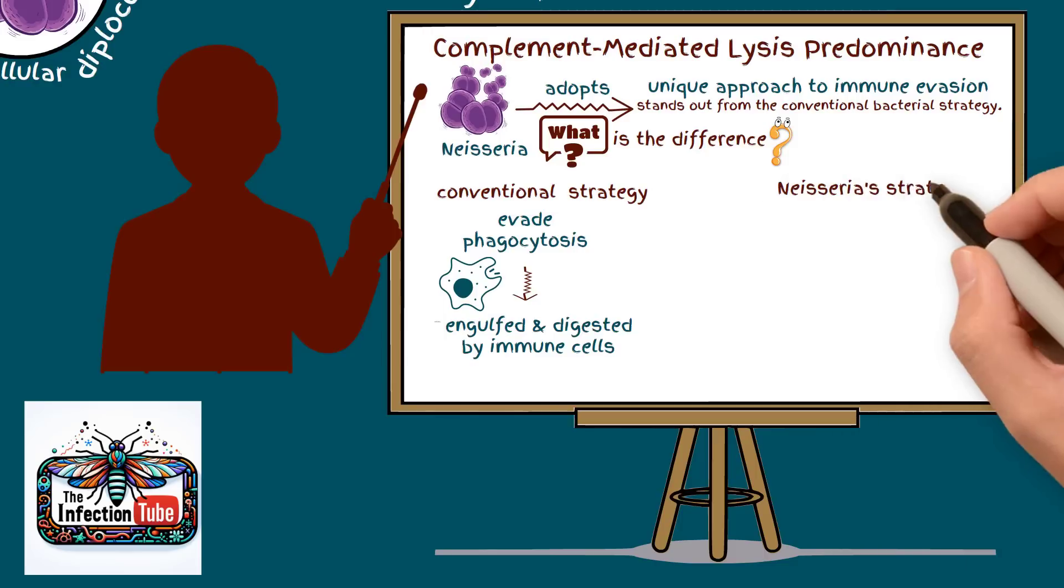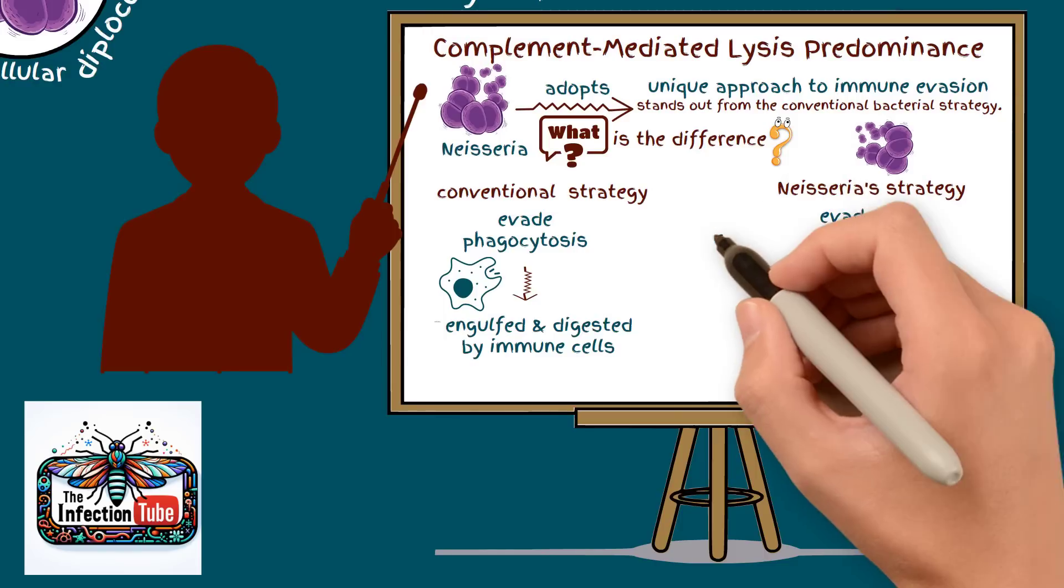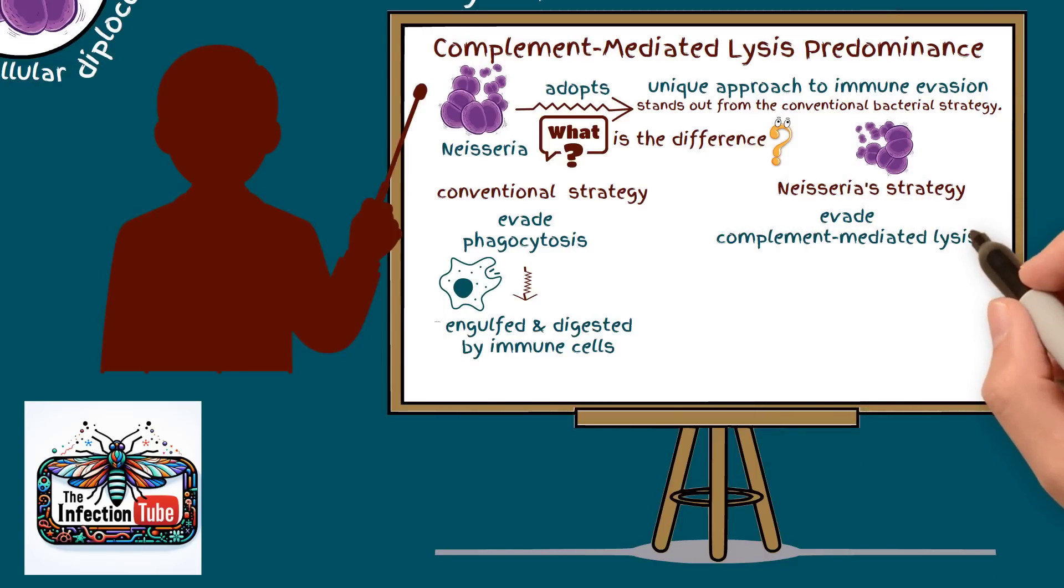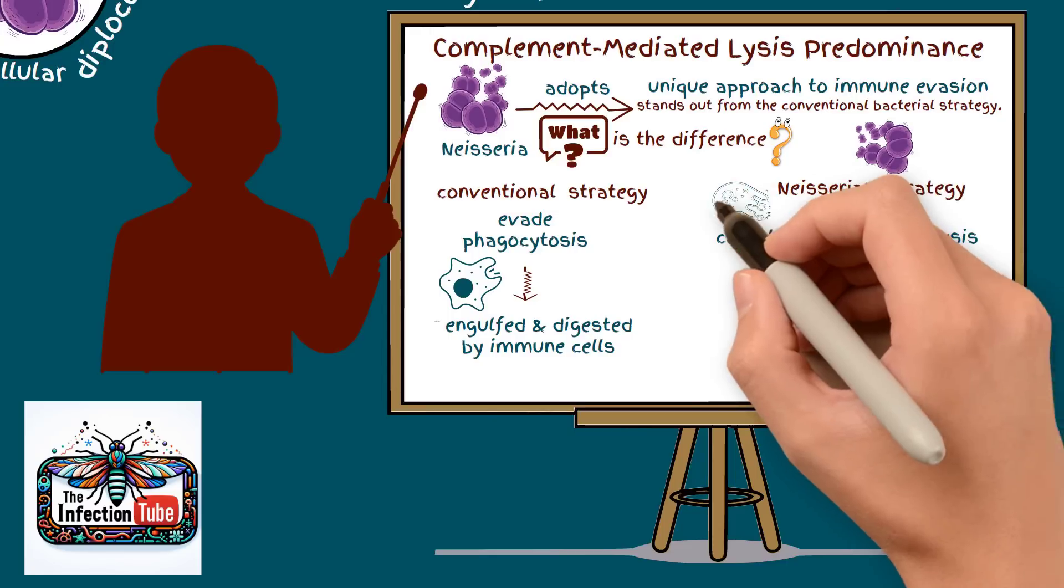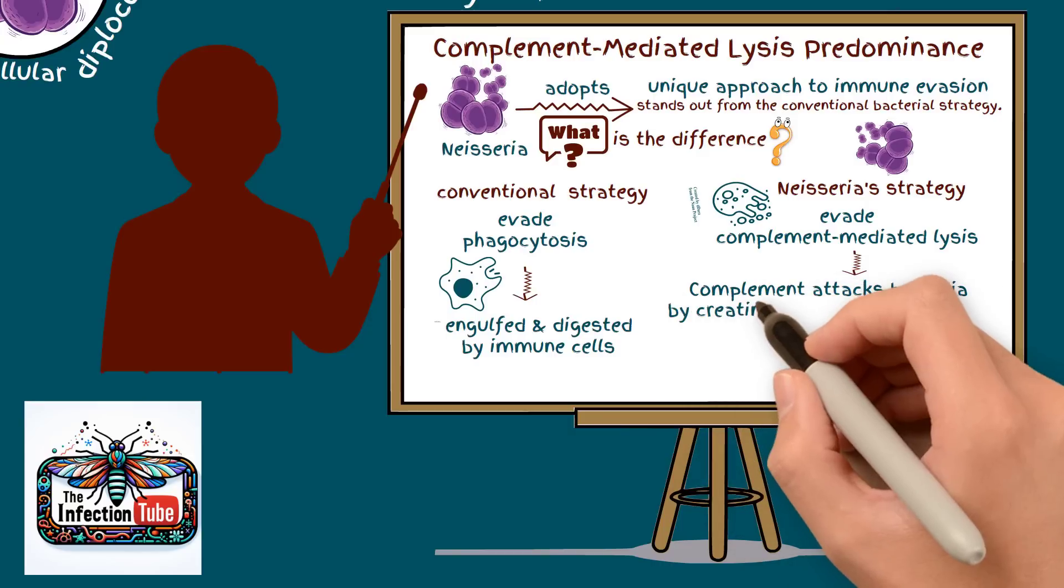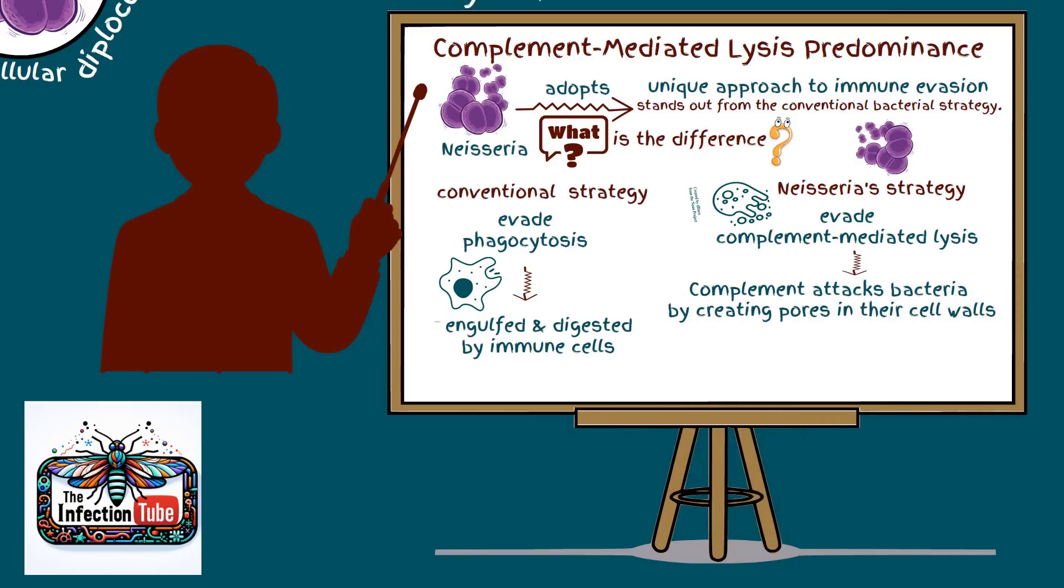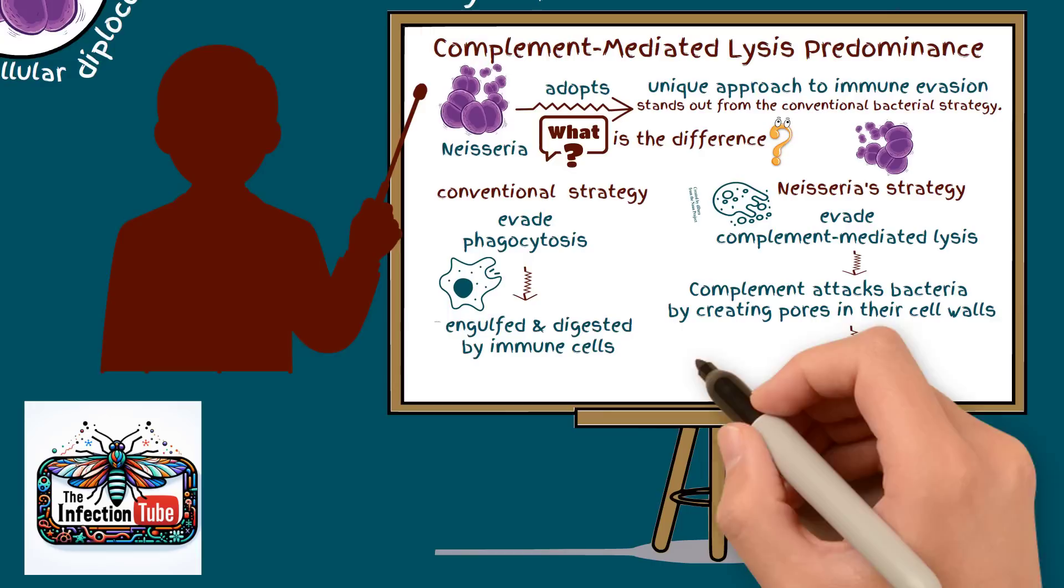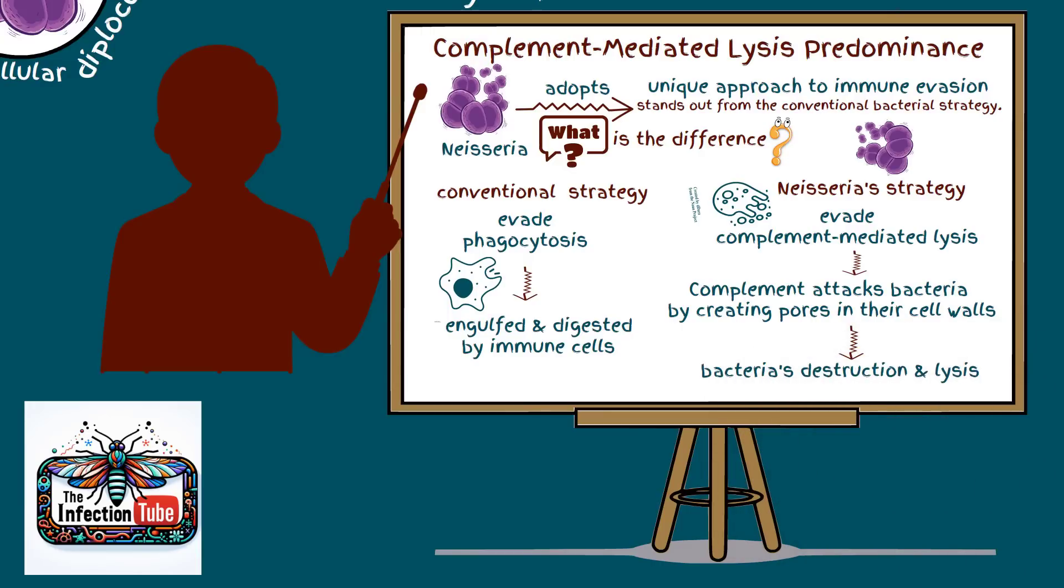However, Neisseria's strategy is to target evading complement-mediated lysis. This is a defense mechanism where the complement attacks bacteria by creating pores in their cell walls, resulting in the bacteria's destruction and lysis.